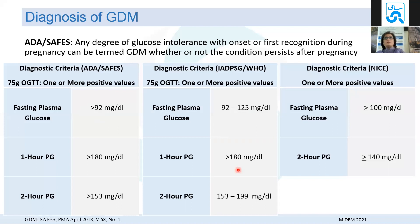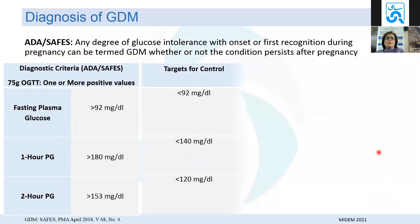Different countries use different criteria, but the society of endocrinologists in this region and the ADA agree: one abnormal test is GDM. NICE criteria are more relaxed — fasting sugar equal to or more than 100, two-hour sugar equal to or more than 140. Note: the numbers shared for control are targets for management, not diagnostic numbers. Targets are: fasting less than 90–92, one-hour less than 140, two-hour less than 120.